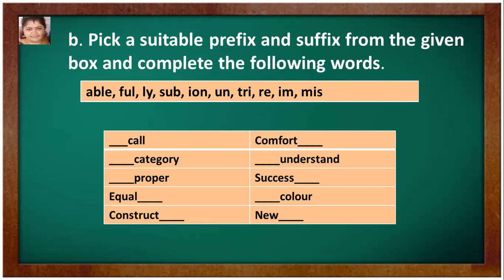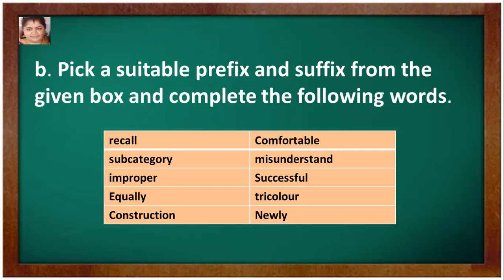Pick a suitable prefix and suffix from the given box and complete the following words. The answers are: recall, subcategory, improper, equally, construction, comfortable, misunderstand, successful, tricolor, newly.